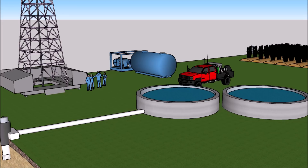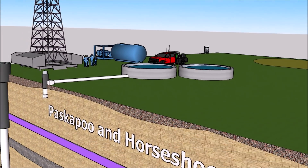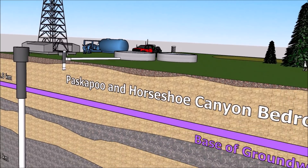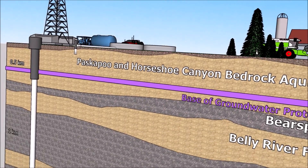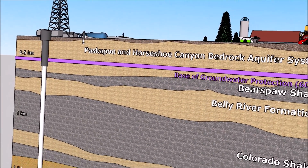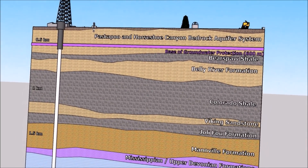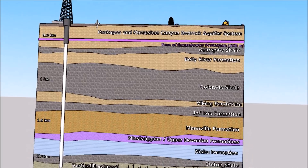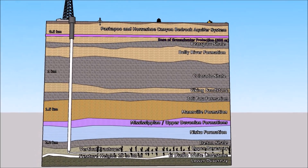Typical domestic use aquifers within the Pascapoo Formation range between 30 to 50 meters below ground surface, and deeper confined aquifers range between 50 to 500 meters below ground.